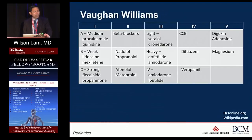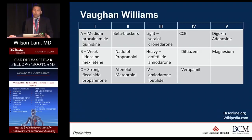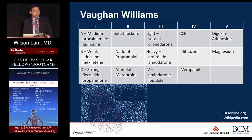The Vaughan Williams classes: class 1 are your sodium channel blockers, class 2 are your beta blockers, class 3 are your potassium channel blockers, class 4 your calcium channel blockers, and class 5 from some other mechanism.